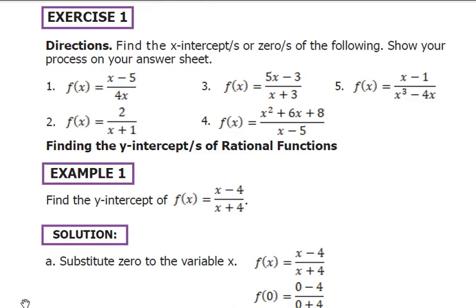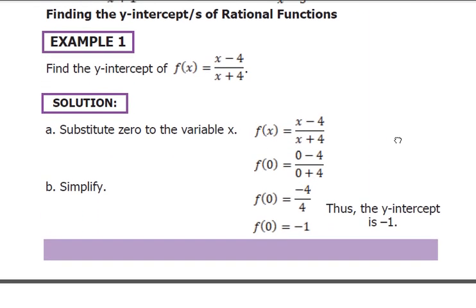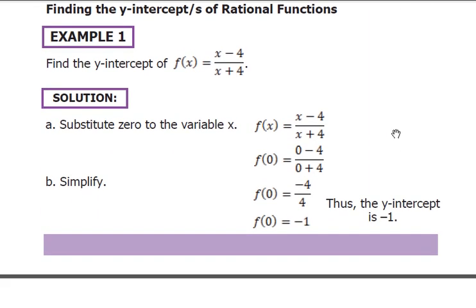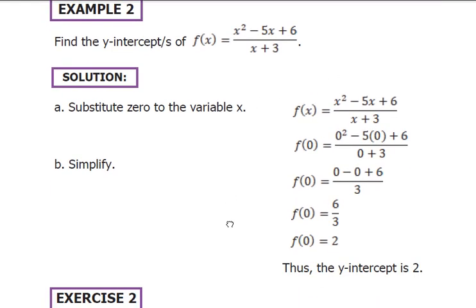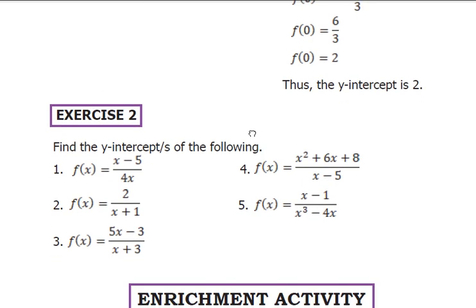Moving on to another topic: finding the y-intercepts of rational functions. In finding this, we set x equals 0 and solve for the value of y. Consider Example 1: f(x) equals (x minus 4) all over (x plus 4). Evaluating f(0), we find f(0) equals negative 1. Therefore, the y-intercept is negative 1. It's easy to evaluate the y-intercept.